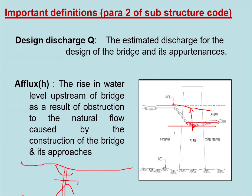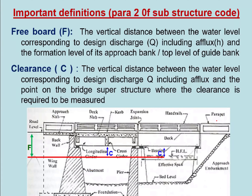Another important thing is freeboard and clearance. In the railway, we talk about freeboard — the difference between the formation level on the approach of the bridge and the highest water level at the bridge. That is called freeboard. The difference between the highest water level in the bridge and the lowest part of the superstructure is called clearance. These two things are required when deciding the span arrangement based on design discharge.